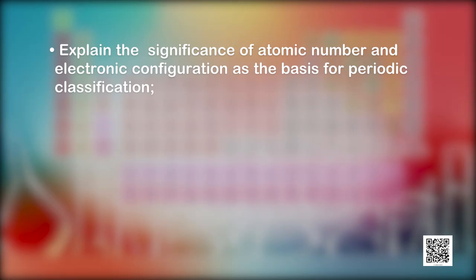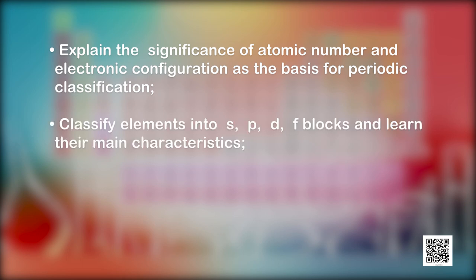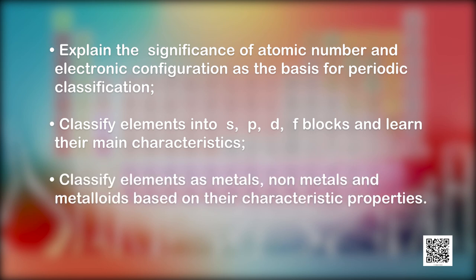We already know that the long form of the periodic table is the most widely used modern periodic table, arranging all known elements into 7 periods and 18 groups. We are now going to discuss how elements are placed in the periodic table based on their electronic configuration. After this discussion, you will be able to explain the significance of atomic number and electronic configuration as the basis of periodic classification, and classify elements into S, P, D, and F blocks and as metals, non-metals, and metalloids.